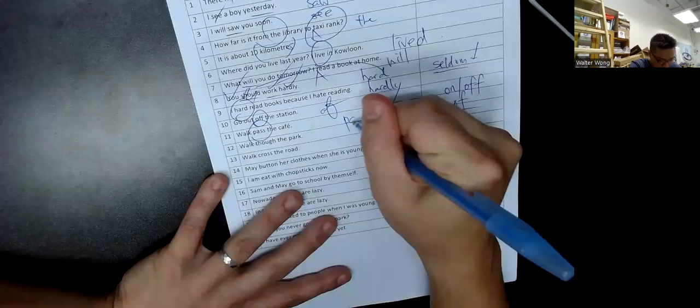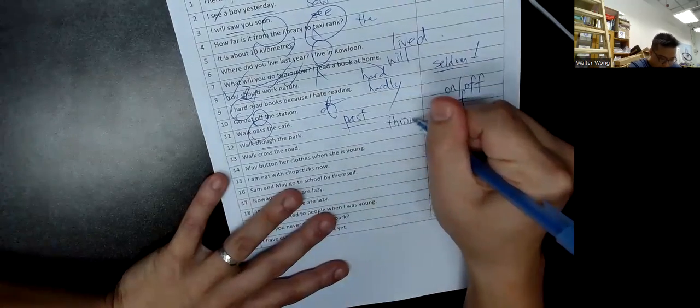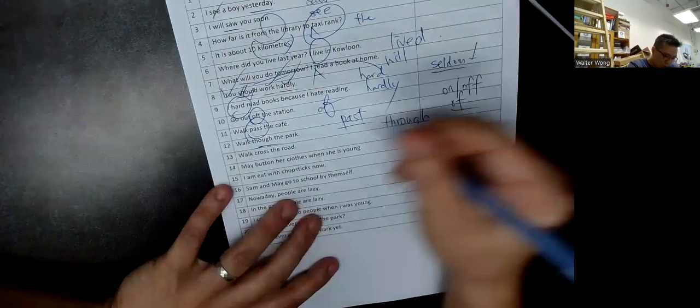Or past - the spelling is all wrong. P-A-S-T. Through the park - notice it has an R. Without R is though. Walk across the road.